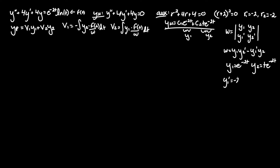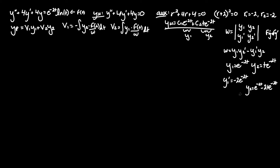y₁' = -2e^(-2t). For y₂', we use the product rule f'g + fg': letting f = t and g = e^(-2t), we get f' = 1, so y₂' = e^(-2t) + t·(-2e^(-2t)) = e^(-2t) - 2te^(-2t). Plugging into the Wronskian: W = e^(-2t)·(e^(-2t) - 2te^(-2t)) - (-2e^(-2t))·(te^(-2t)).